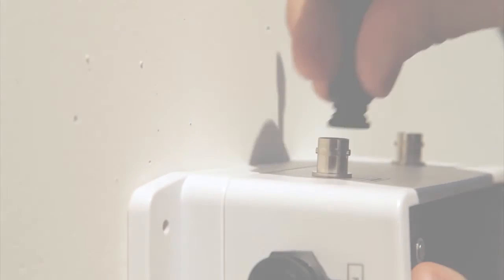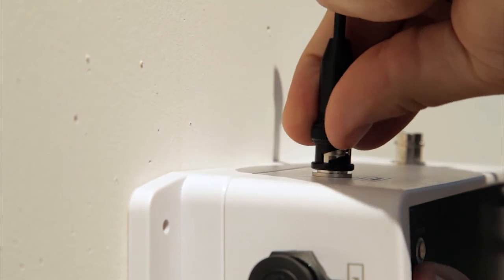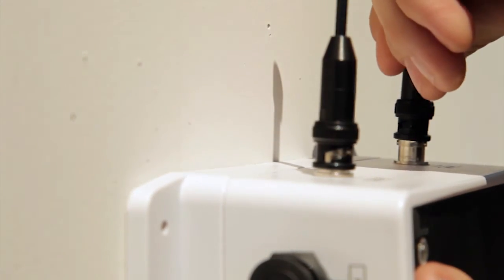If the VNS2200 is equipped with a rubber duck antenna, attach the antenna to the BNC connector on top of the unit.